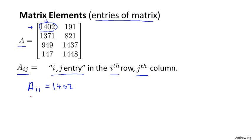Another example, A_12 is going to refer to the entry in the first row and the second column. And so A_12 is going to be equal to 191. Just a couple more quick examples.